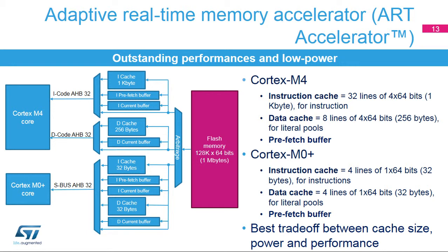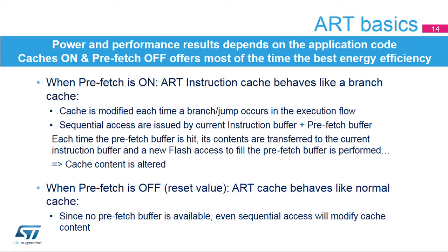If the data is not present in the current buffer, it is read from the pre-fetch buffer if it is present. If not, it is read from the instruction cache if there is a cache hit. Otherwise, a flash access is performed. Flash access arbitration between Cortex-M4 I-code instructions, D-code data, and Cortex-M0-plus SBUS instructions and data uses round-robin. The instruction cache behaves differently depending on whether or not the pre-fetch buffer is enabled.